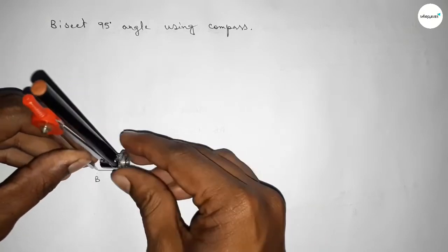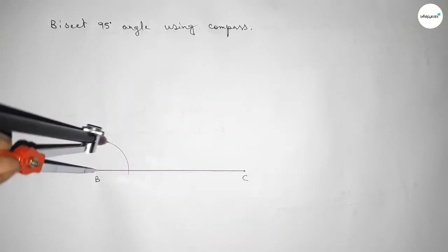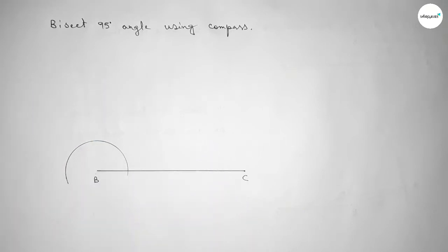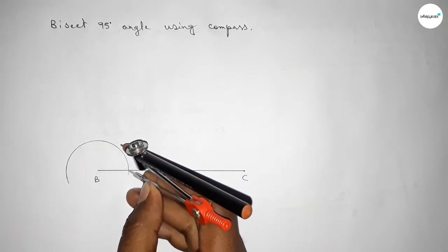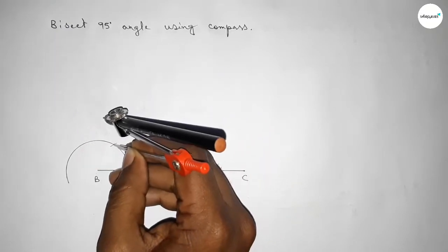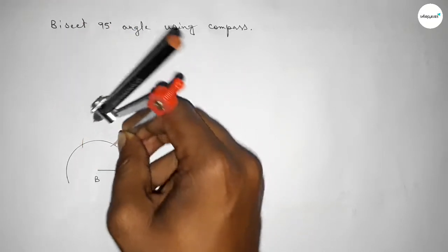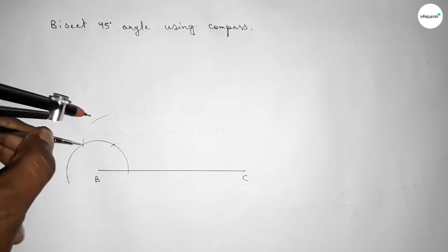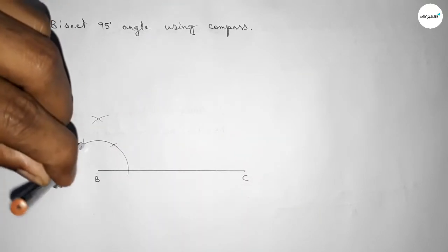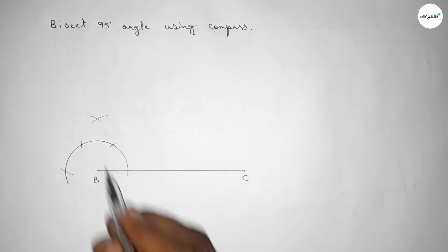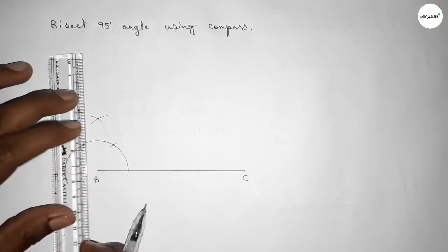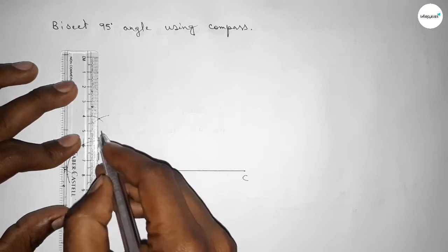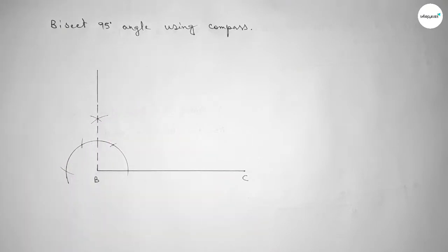Putting the compass on point B, taking any length and drawing an arc. Again putting the compass here with the same length and cutting here, then putting the compass here and cutting here, and drawing an arc. Both curves intersect at a point. Now joining this to get a 90-degree angle.